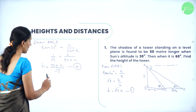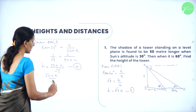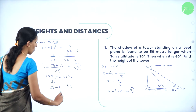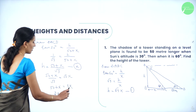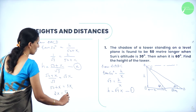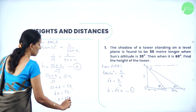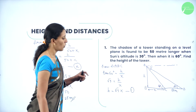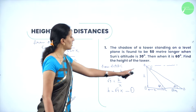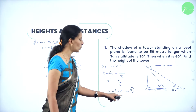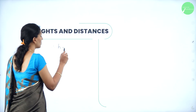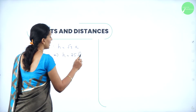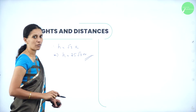Equating equations 1 and 2 we get (50 plus X) divided by root 3 equals root 3X, so 50 plus X equals 3X, giving 2X equals 50, therefore X equals 25 meters. This is the shadow of the tower when the angle was 60 degrees. Now to find the height: H equals root 3X, therefore H equals 25 root 3 meters. So this is the height of the given tower.